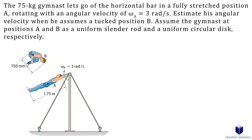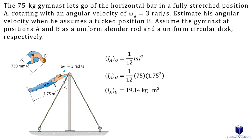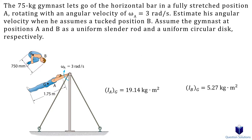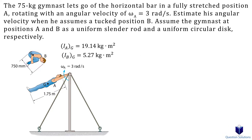When the gymnast is fully stretched, we can use the slender rod equation. The mass is 75 kg and the length is 1.75 m. When he is tucked, we can use the equation for a uniform circular disc. The mass is the same. For the radius, it is 0.75 m divided by 2, since in the diagram we are given the diameter of the circle. Now we can write our conservation of angular momentum equation.